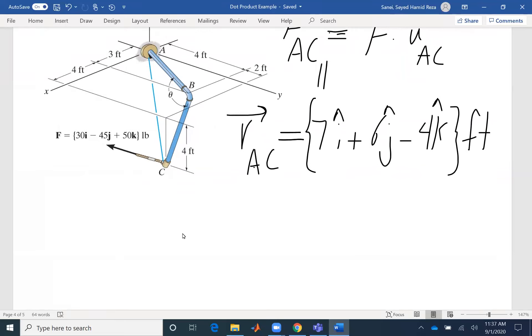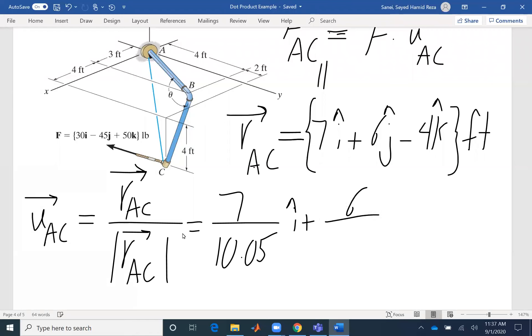UAC is RAC divided by its magnitude. If I apply that would be 7 over 10.05i plus 6 over 10.05j minus 4 over 10.05k.